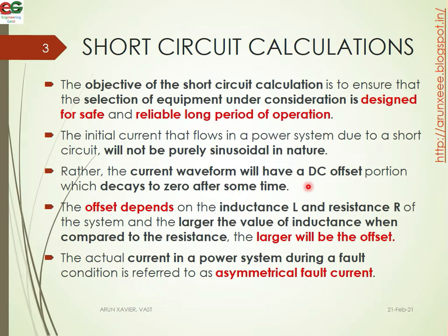The DC offset depends upon the inductance L and resistance R of the system. The larger the value of inductance when compared to resistance, the larger will be the offset. The larger the inductance compared to the resistance, the greater the chances of a DC offset developing.